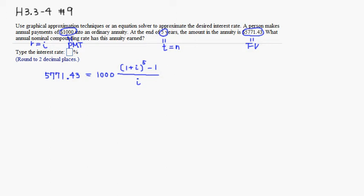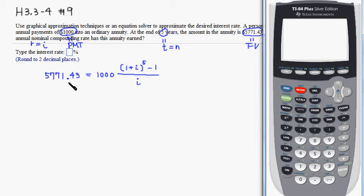I'm going to use a graphing calculator and put the left side as y1. In this case, 5771.43. That's y1. Then I'm going to put the right-hand side as y2. So 1000, left parenthesis, another left parenthesis, 1 plus x (I use x instead of i), right parenthesis, raised to the fifth power, then subtract 1, right parenthesis, and then divide by i, but I use x instead.